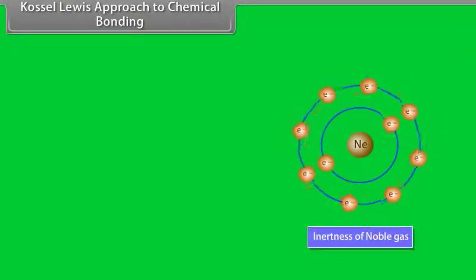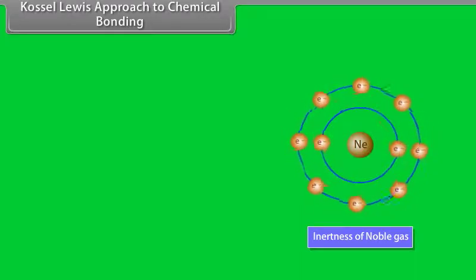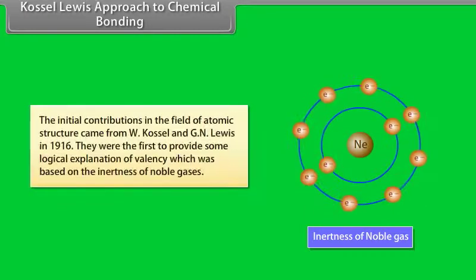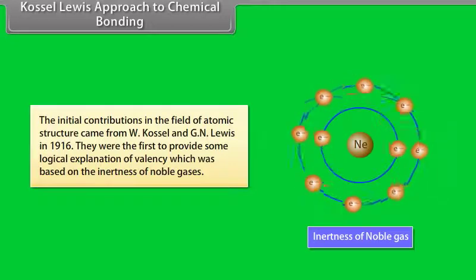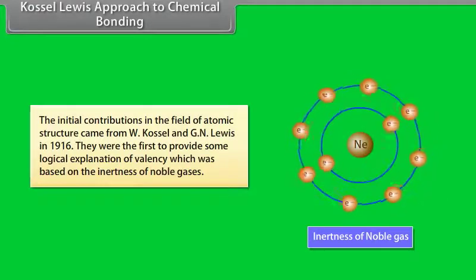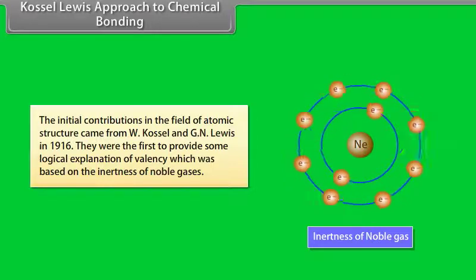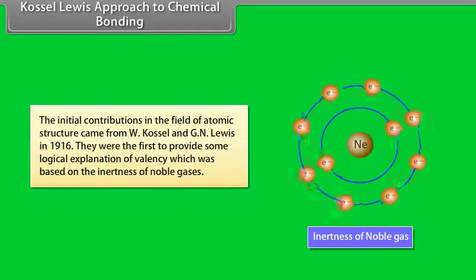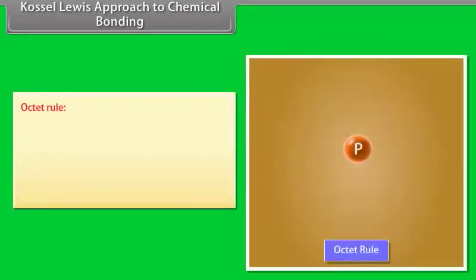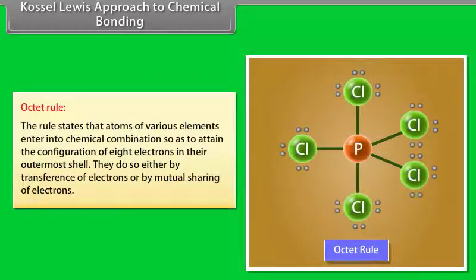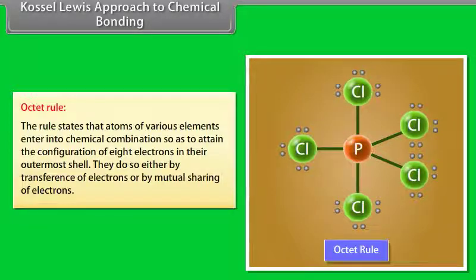The developments in the field of atomic structure provided foundations for various theories of valency. The initial contributions came from W. Kossel and G. N. Lewis in 1916. They were the first to provide a logical explanation of valency based on the inertness of noble gases. The octet rule states that atoms of various elements enter into chemical combination so as to attain a configuration of eight electrons in their outermost shell, either by transference or by mutual sharing of electrons.